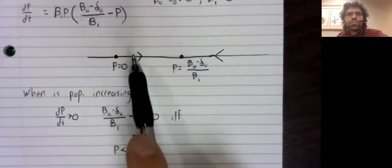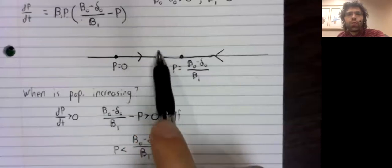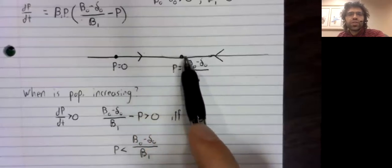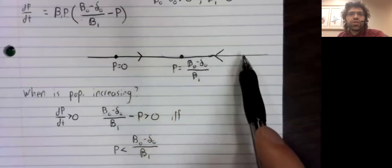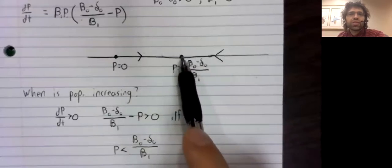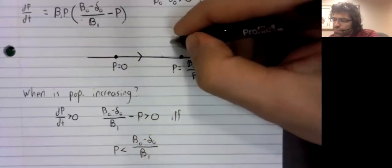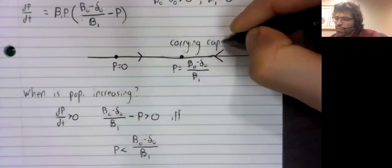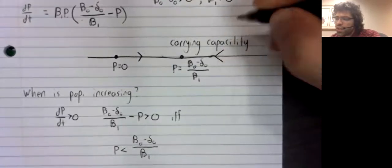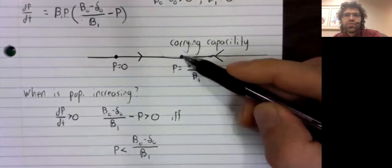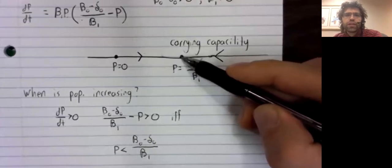So if the population is initially small, it grows until it reaches this value. If the population is initially large, it shrinks until it reaches this value. But either way, the population changes until it reaches this value, then stops changing. And this value is called the carrying capacity.